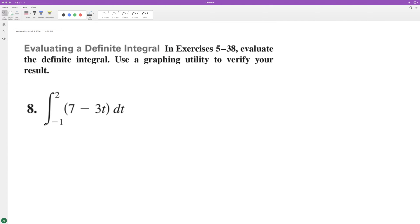Let's create the following. The integral from negative 1 to 2 of 7 minus 3t dt equals 7t minus 3t squared over 2, evaluated from negative 1 to 2.